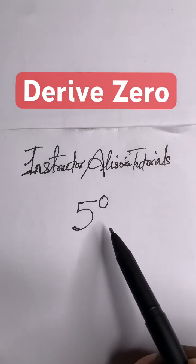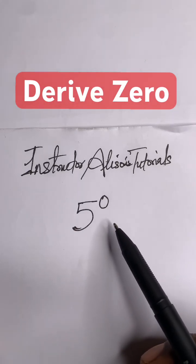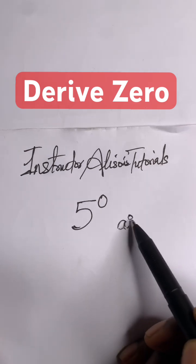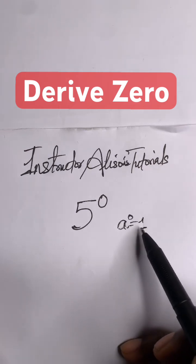Most students are familiar with the zero exponent, but no one told you how you can derive it. A lot of students know that a to the power of zero equals one. How did you arrive here?